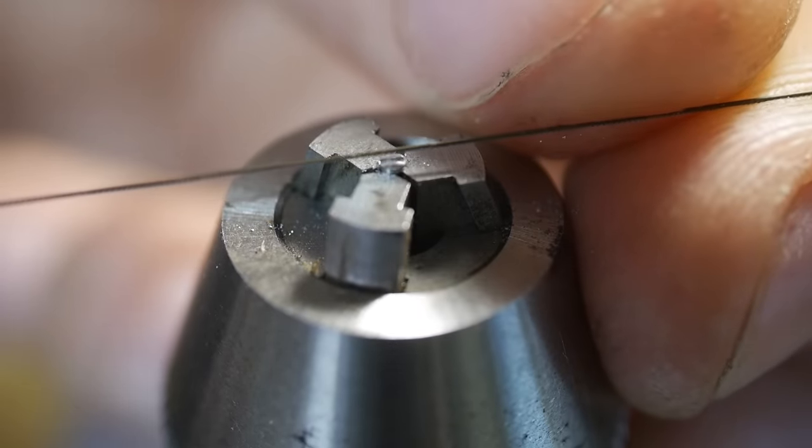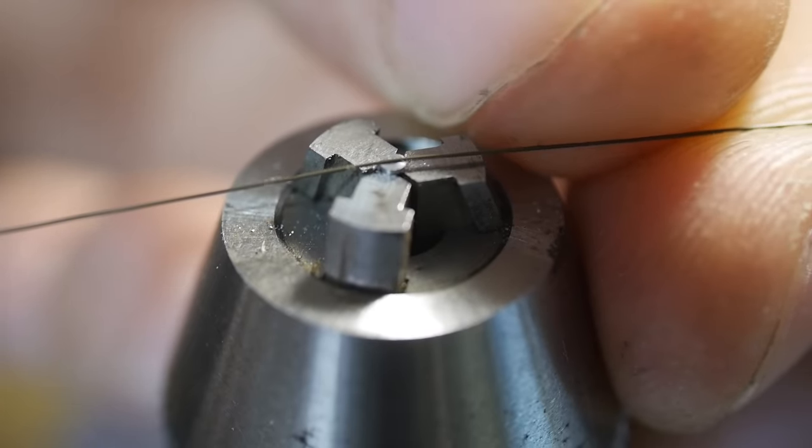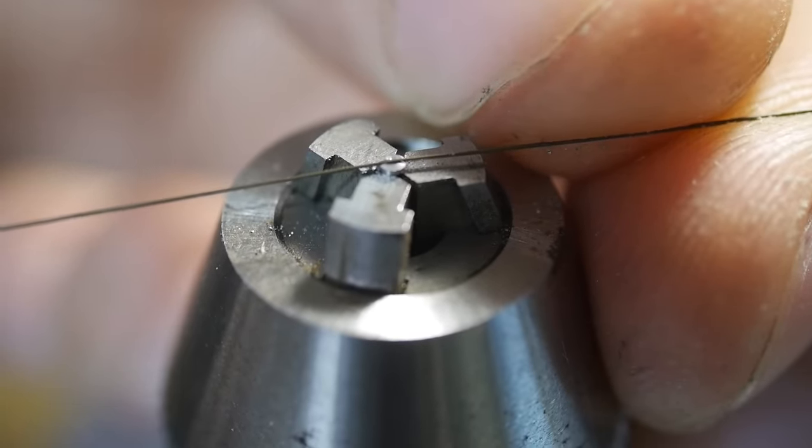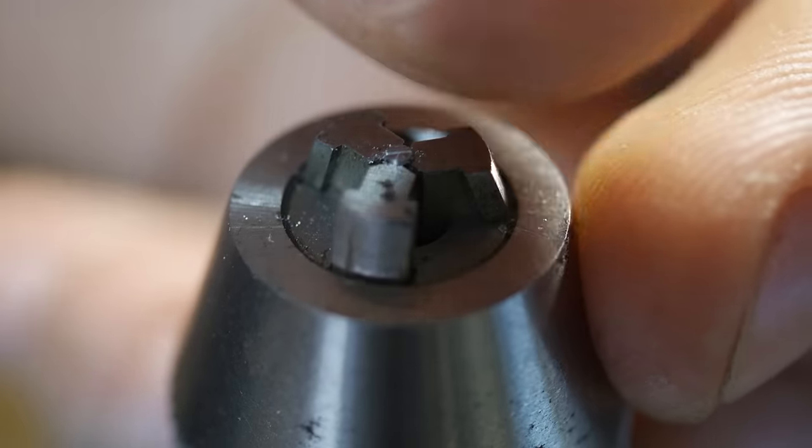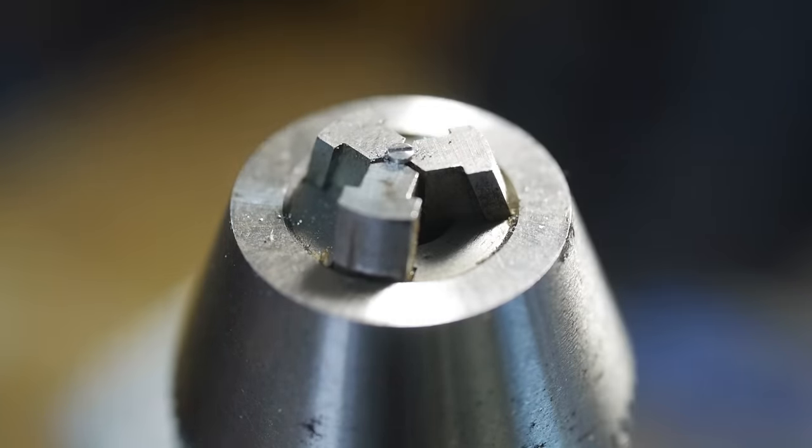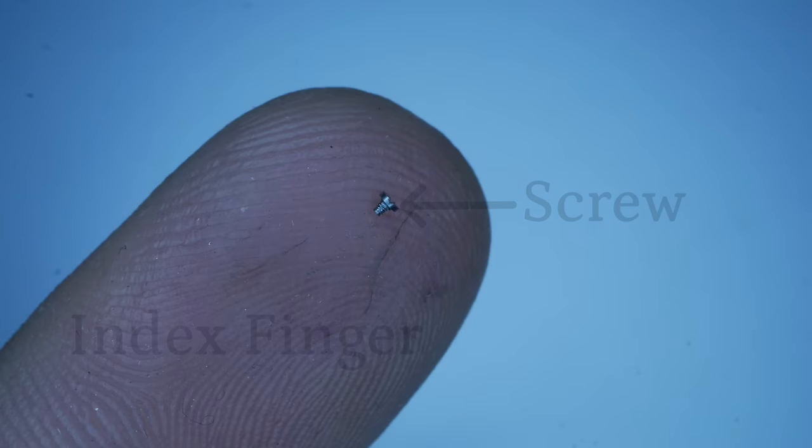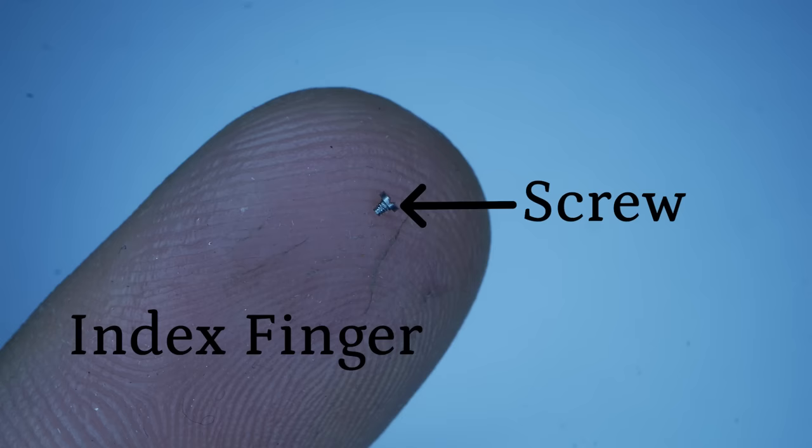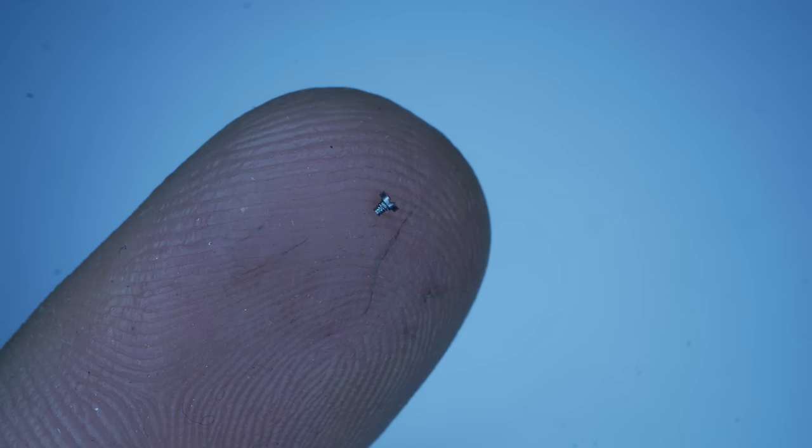The finished screw is so small that it is difficult to recognise without magnification. To put this into the context of watchmaking, a skilled watchmaker will be able to make a screw half this diameter, and a typical balance staff is just 0.1mm.